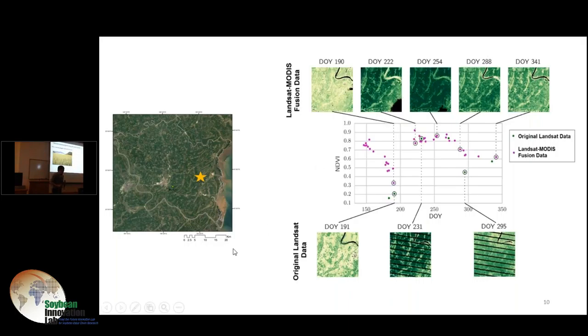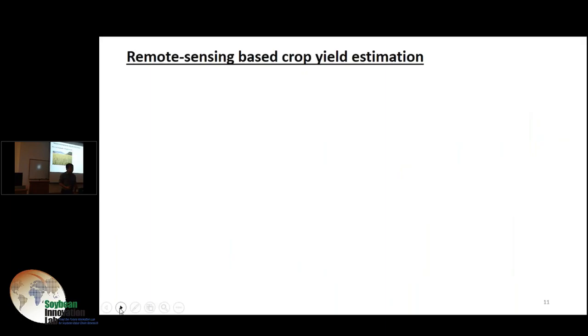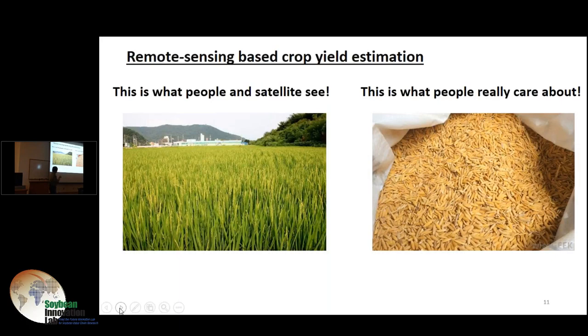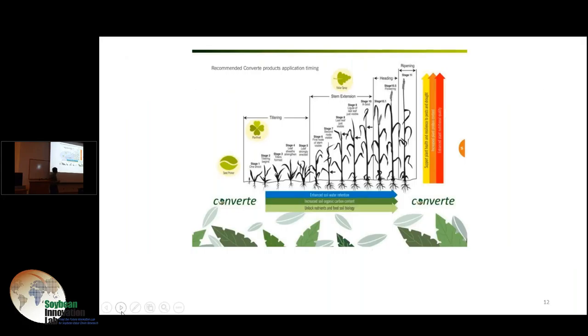The next challenge we are facing is how to do crop yield. This is what people see and the satellite sees, this is the crop. But what we really care about is this grain. There's a big gap from here to here, but this is the ultimate goal. If we talk about plant physiology, essentially the crop has two stages: one is the vegetative stage, one is the reproductive stage. The vegetative stage, crops grow their leaves and height.